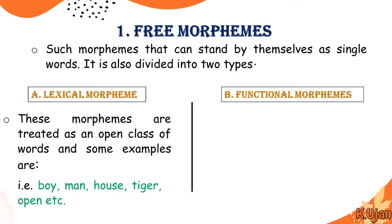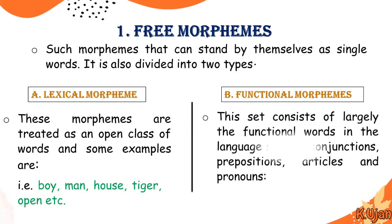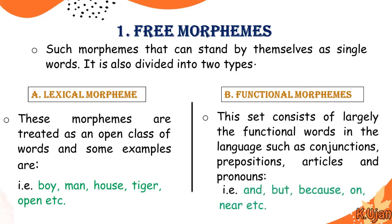These open-class words — these lexical morphemes — are the base words which have meanings. On the other hand, functional morphemes have only grammatical functions, like 'and,' 'but,' 'because,' 'on,' 'near.' These words do not carry independent meaning in the language; they have grammatical functions. Functional morphemes consist largely of functional words such as conjunctions, prepositions, articles, and pronouns.